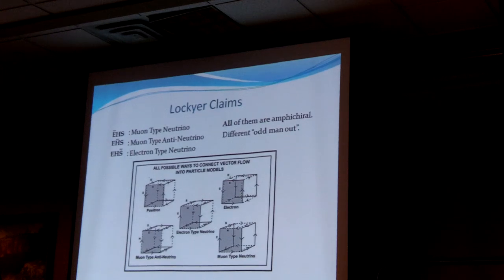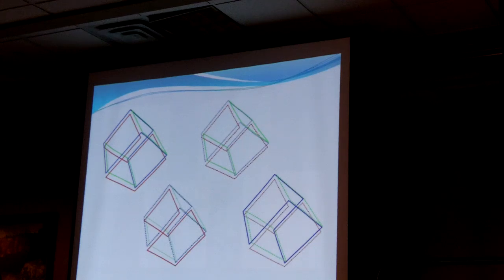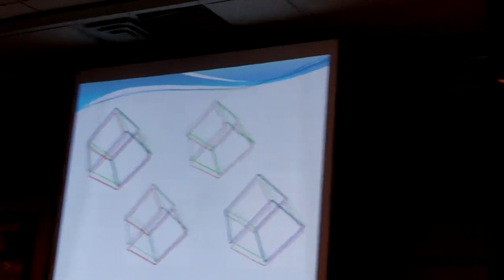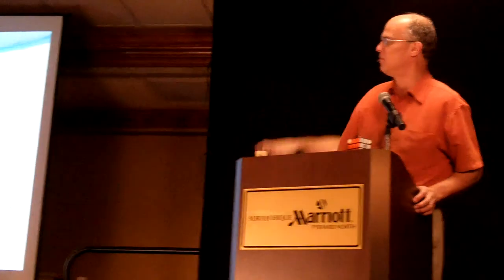He's only claiming one of them is amphichiral, so I disagree with him there — I don't think he's identified these two properly. I don't even know what a neutrino is or if one exists. But he is correct in saying there are only five possible ways to do it: the electron and positron moving in forward or reverse direction, and the three at the bottom depending on which of the three is the odd man out.